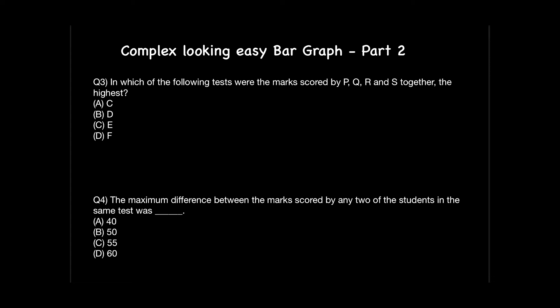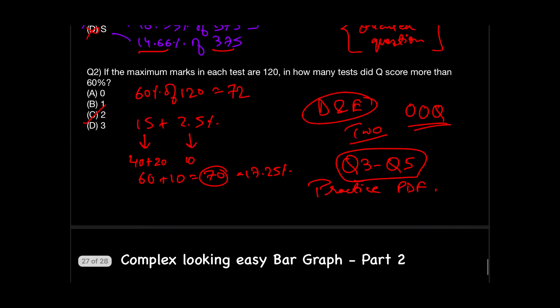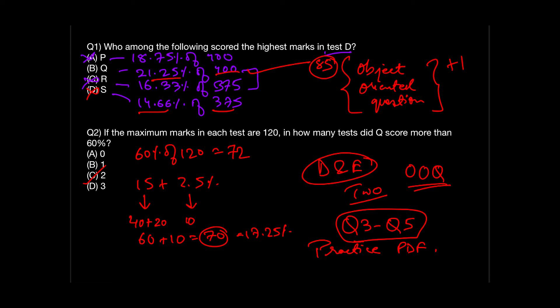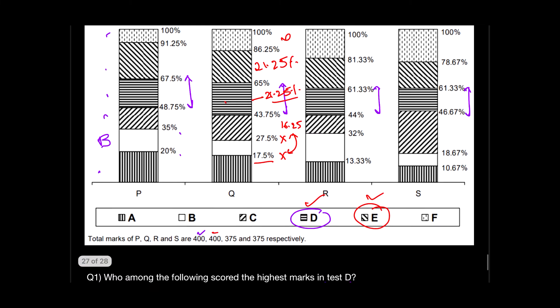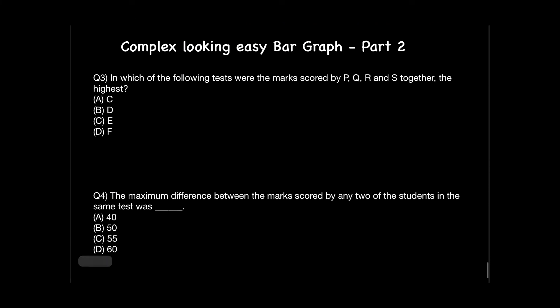The bar graph is the same as the last session but the questions are different. In the last video we had two observation-oriented questions solvable without full calculations. Question three, however, demands more calculation. It asks: in which of the following tests were the marks scored by P, Q, R, S all together the highest? We need to compare all six tests, but since options don't include A and B, we skip those — we only calculate C, D, E, and F, adding the four students' marks for each test.